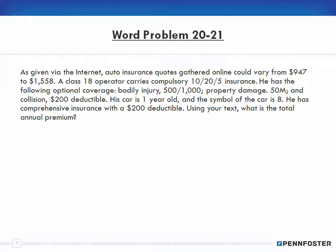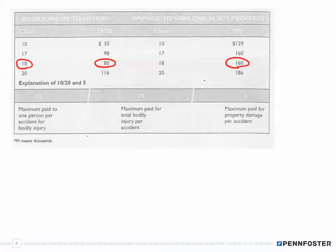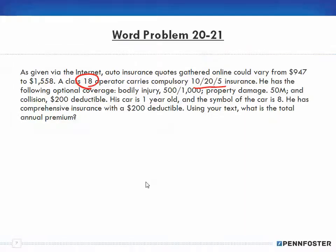We start with the liability for a class 18 operator, 10/20 and 5 insurance. Looking at the table for class 18, the premium for 10/20 is $80, and for $5,000 in damage it's $160. So $80 plus $160 is $240. For liability, it's $240.